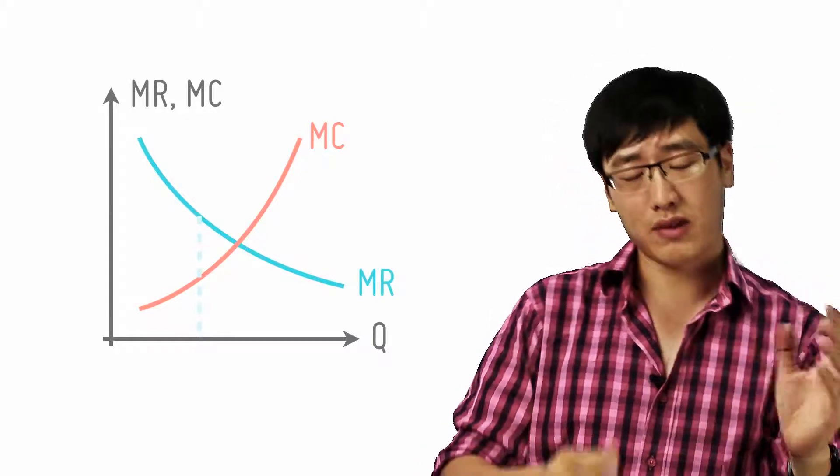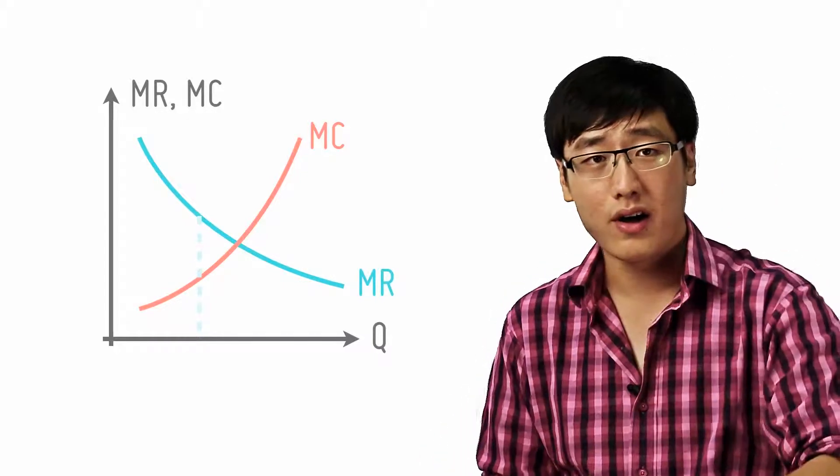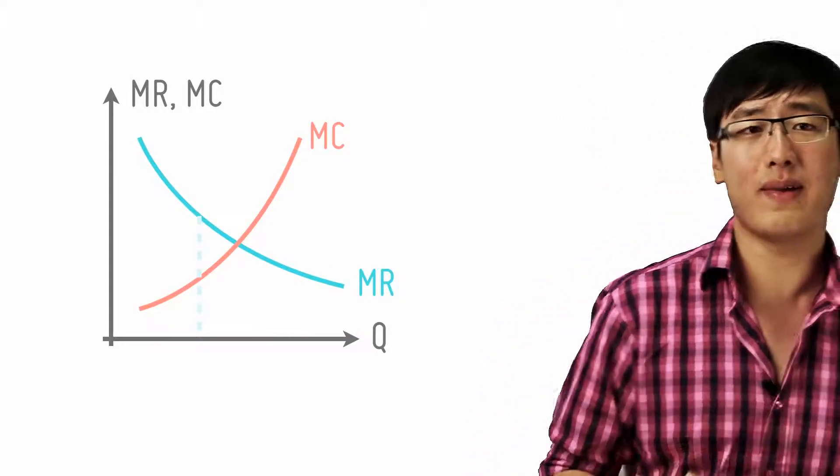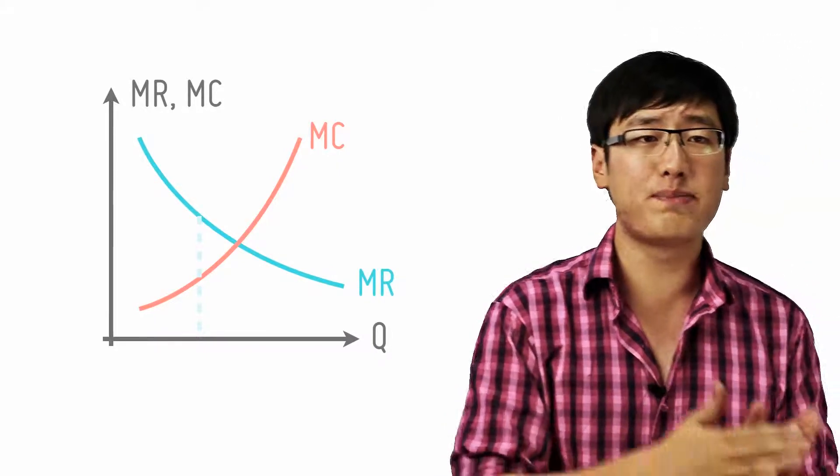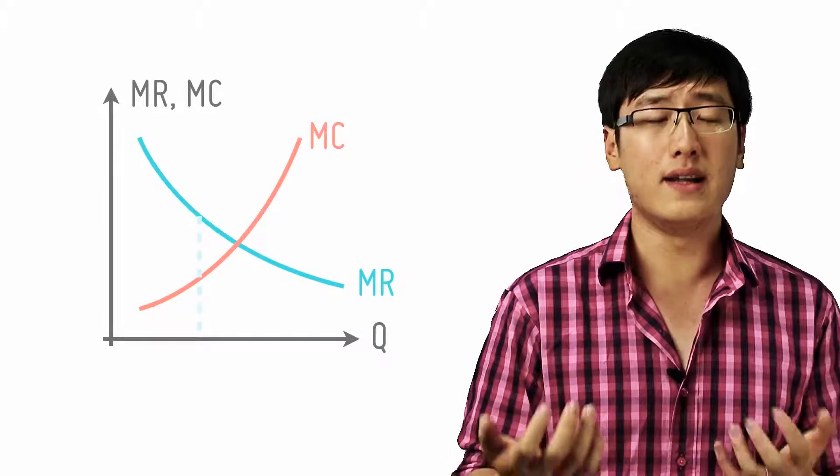MR is higher than MC, so it means the additional unit will earn more than it costs. So when MR is higher than MC, your firm should actually produce more to earn that profit.